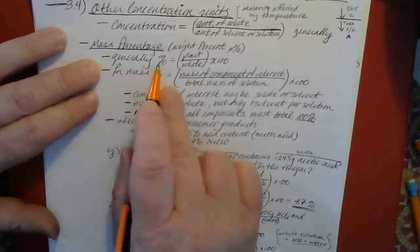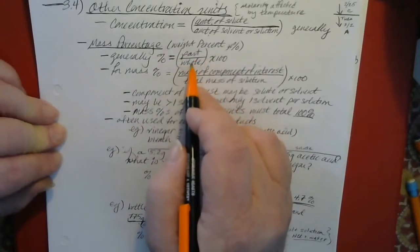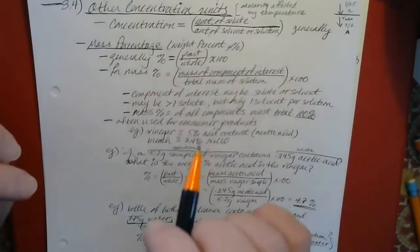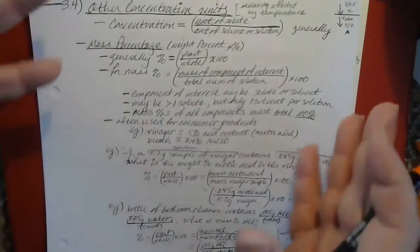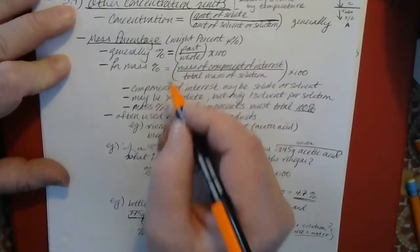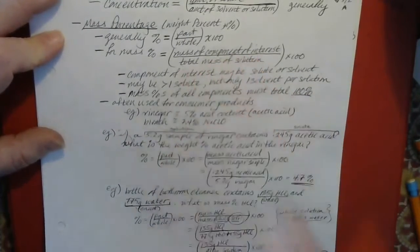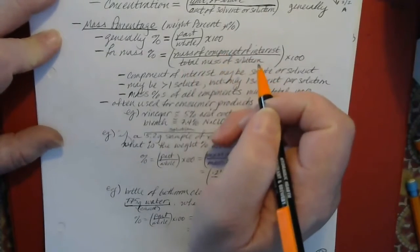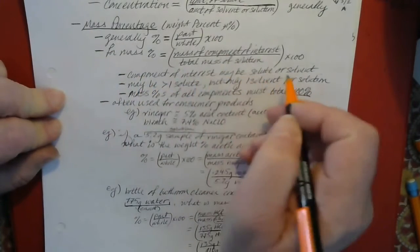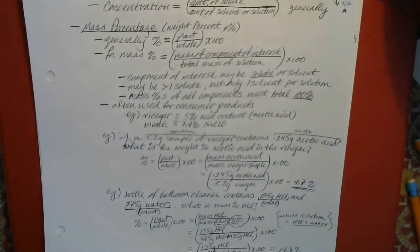Generally, percent is the part you're interested in over the whole thing times 100. In this case, the part we're interested in will usually be a solute, but it could be a solvent, and the whole thing would be the entire sample or solution. More formally, mass percent equals the mass of the component of interest — the part of the mixture you're interested in — divided by the total mass of the solution or sample, times 100. The component of interest could be solute or solvent, though it's usually the solute.